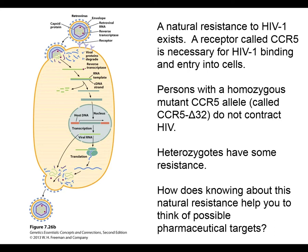Once a cell is infected with HIV, it just keeps making new virus particles — which makes it especially effective at maintaining infection. We will discuss genetic resistance to HIV later in the course. People with a genetic resistance to HIV have a mutated gene for the receptor that HIV binds to, so they can't produce that receptor and therefore cannot get HIV.